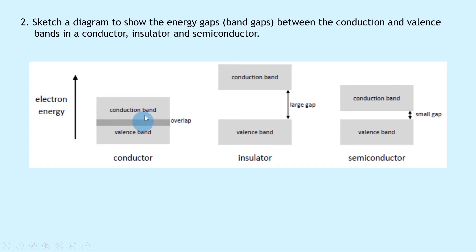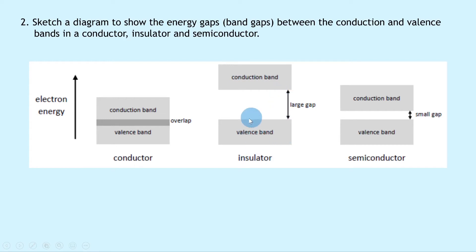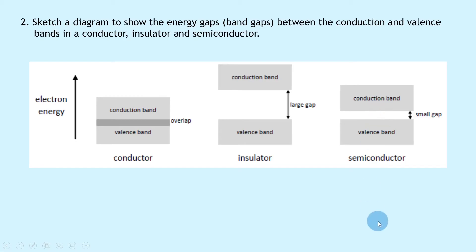In a conductor, the conduction band is partially filled, which means there is room for electrons to move, so conduction can take place. For the insulator, the valence band is completely filled with electrons whereas the conduction band is empty, because the band gap is so large that excited electrons never have enough energy to cross into the conduction band. For the semiconductor, the band gap is so small that electrons from the valence band can gain enough energy when excited to move into the conduction band and conduct.